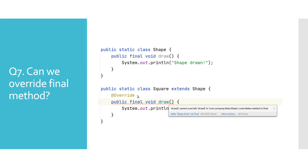Subclasses will have to use the same implementation of the final method everywhere. Here we tried overriding a final method in the subclass Square, but as expected we're getting a compile time error. This error would also be reported if we were not using an @Override annotation.